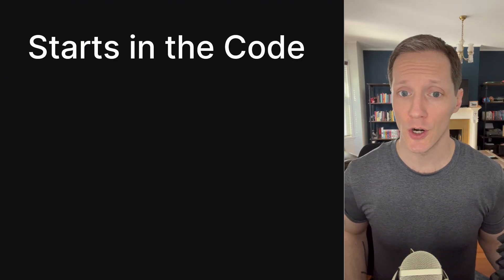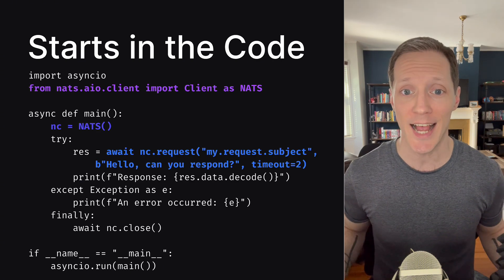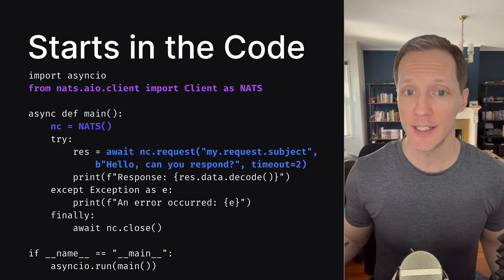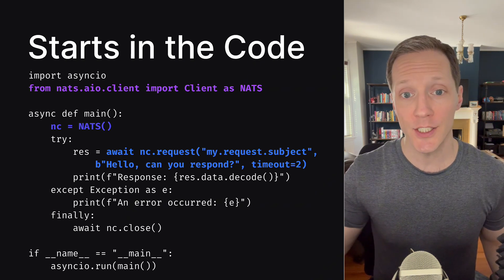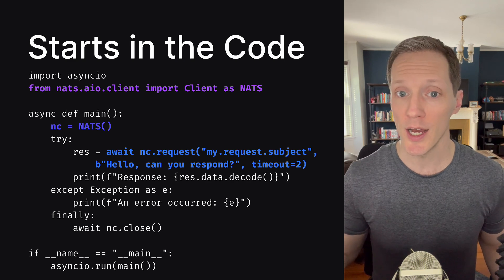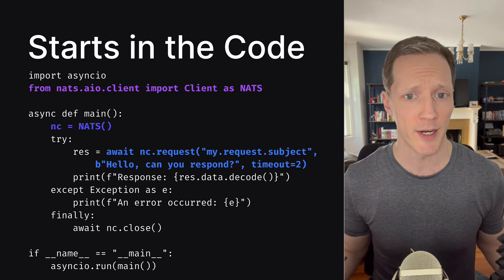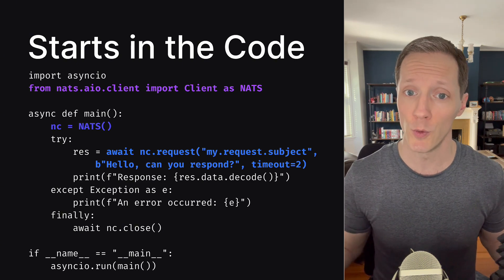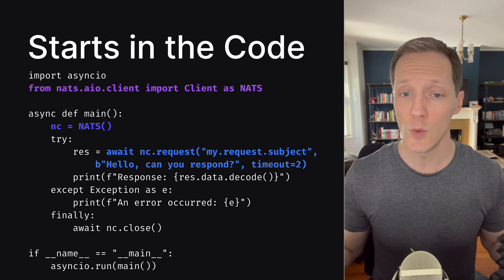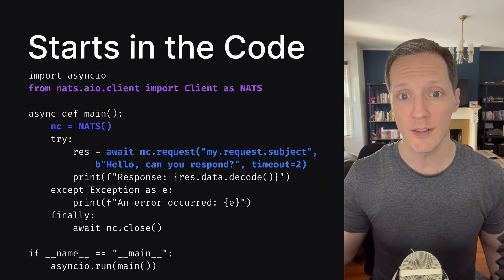NATS, on the other hand, starts in the code. The benefit of it starting in the code is we know exactly what's going on at the code level. We connect through a NATS SDK to a NATS server, and with that connection we can see exactly what's going on. There's no blame game about whether the infrastructure was configured right, environment variables were passed correctly, or the code didn't handle an error. We can see exactly what's happening based on our code interacting with NATS directly.